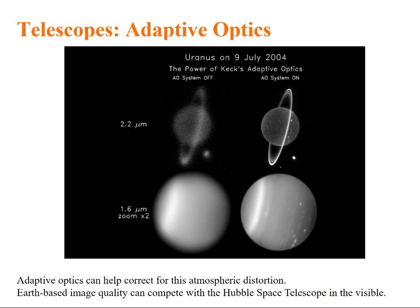A new technology is right now available called adaptive optics. Adaptive optics can help correct these atmospheric distortions. So, earth-based image quality can be competed with Hubble telescope if we use adaptive optics.